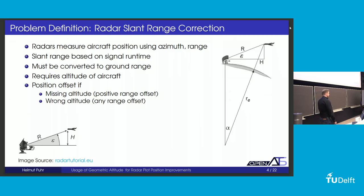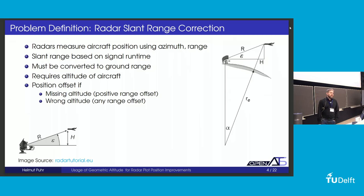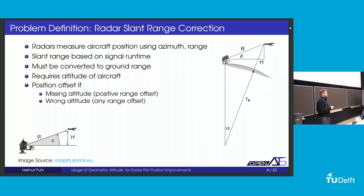Historically speaking, the only source of altitude information in civilian applications was the barometric altitude. If the altitude information used for the slant range correction is missing or wrong, then we will have a range offset.